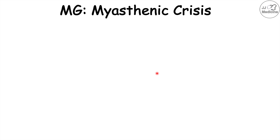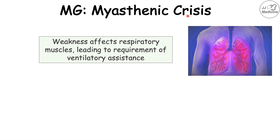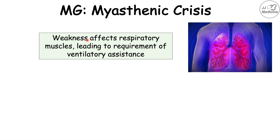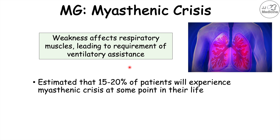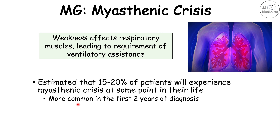In some patients, they can experience what is known as a myasthenic crisis — when weakness affects respiratory muscles, leading to a requirement for ventilatory assistance. This can lead to increased risk of severe complications. Not all patients will get a myasthenic crisis; it's estimated that 15 to 20% of patients will experience one at some point in their life, and it is more common in the first two years of diagnosis.